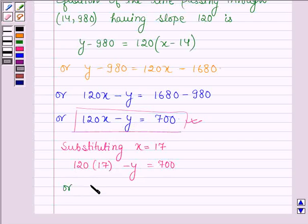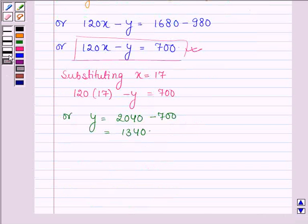or Y is equal to 2040 minus 700 which is equal to 1340.